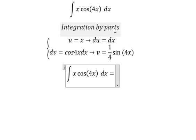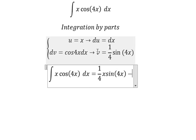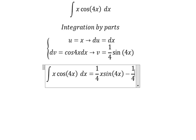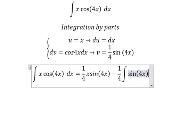So we have u multiplied by v minus the integral of v du. So we put 1 over 4 in here and we have the integration sine 4x dx.